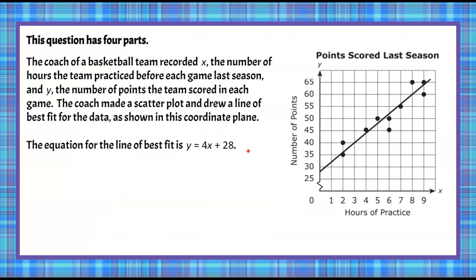Here's our question today — it has four parts. The coach of a basketball team recorded X, the number of hours the team practiced before each game last season, and Y, the number of points the team scored in each game. The coach made a scatterplot and drew a line of best fit, and the equation for the line of best fit is Y equals 4X plus 28.